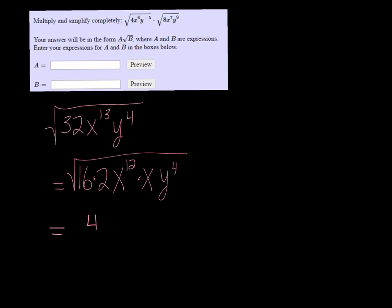So we get 4, and then x to the 6, y squared comes out, and what's left is 2x in the square root.